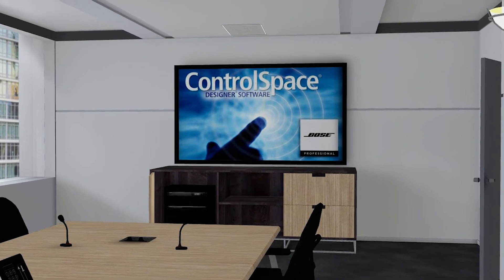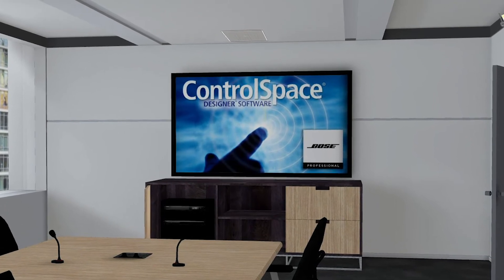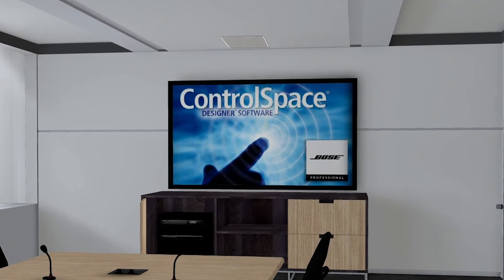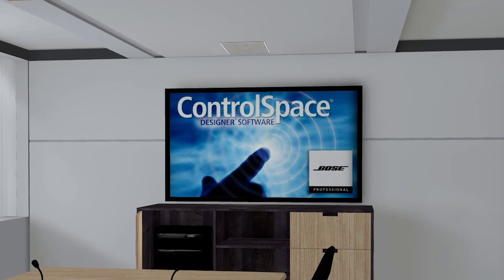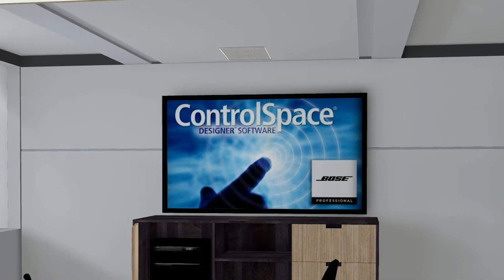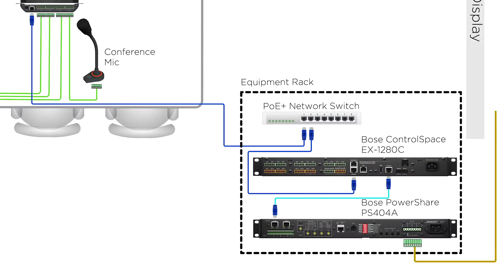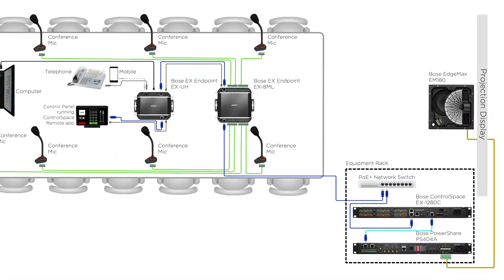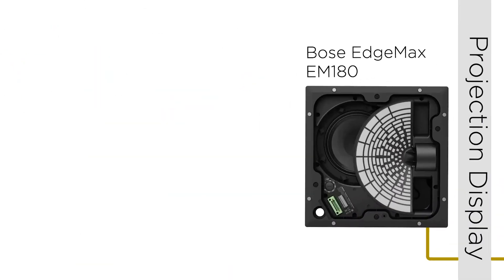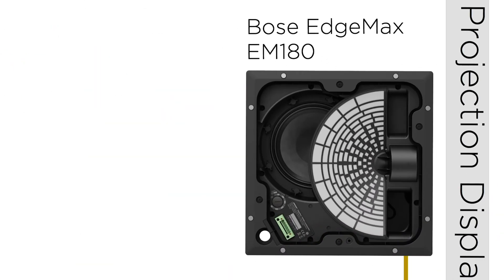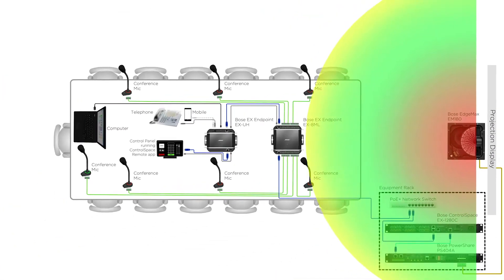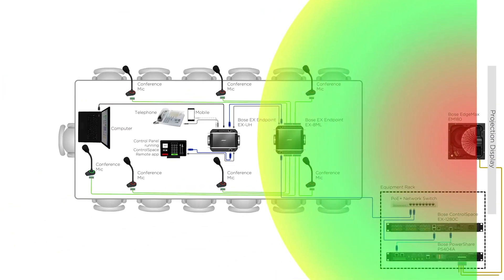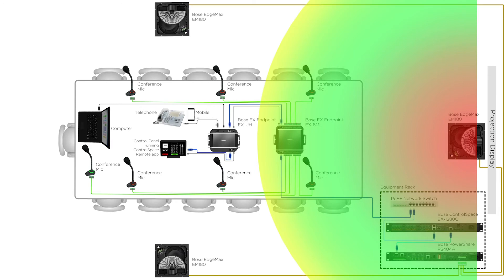In our room, the front EdgeMax loudspeaker projects sound above the video display, making it sound natural as the sound is localized with the video. We recommend the EM-180 model, as it provides nominal 180-degree horizontal coverage. For the rear seating, we recommend two additional EdgeMax loudspeakers for a total of three units, providing full room coverage.